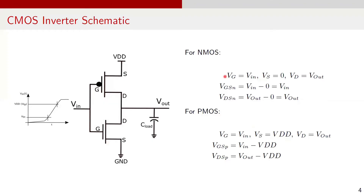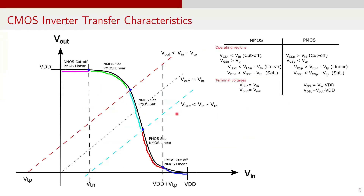Let's summarize the terminal voltages. For NMOS: VG equals VIN, VS is 0, and VD is Vout. VGSN is VIN minus 0, that is VIN. VDSN, the voltage between drain and source of NMOS, is Vout minus 0, or Vout. For PMOS: VG equals VIN, VS equals VDD, and VD equals Vout. VGS for PMOS is VIN minus VDD, and VDS for PMOS is Vout minus VDD.